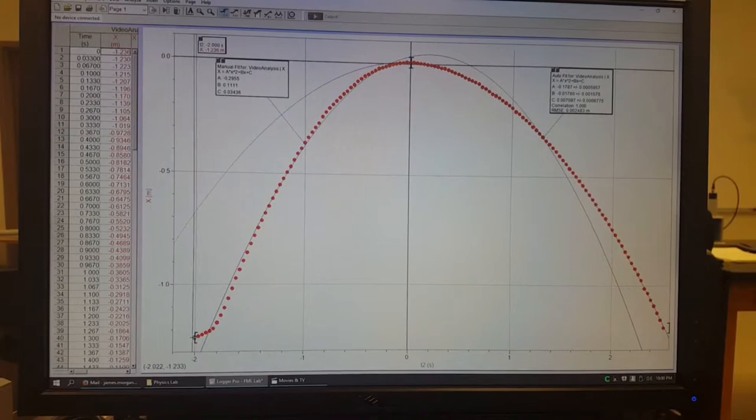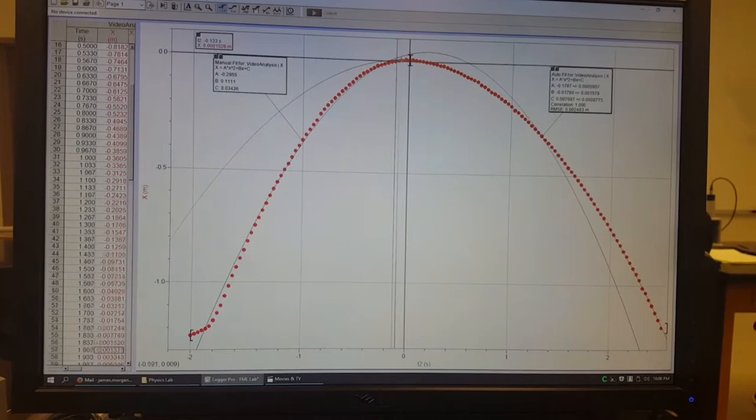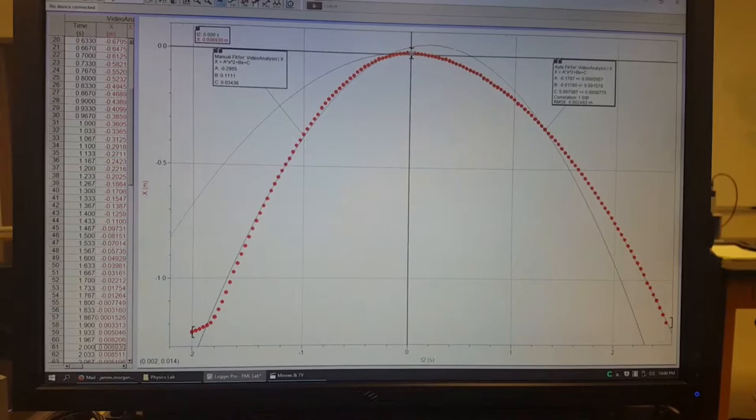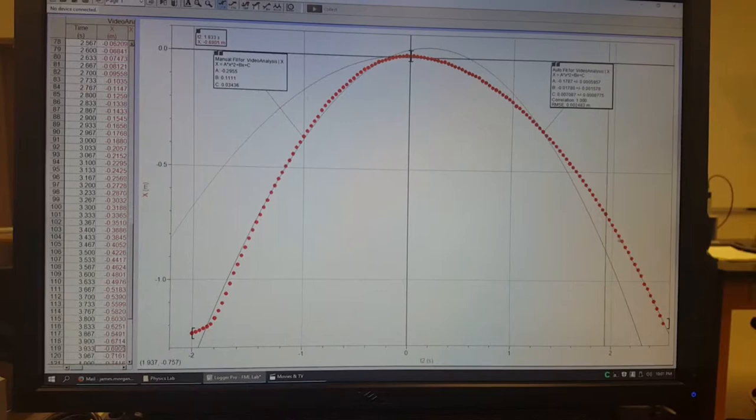Right here you can see the quadratic equation, so this is as it is going up the inclined plane. This right here is V0, the moment whenever, or not V0, but the moment that the car does not move at the very top of the inclined plane. At that point it starts moving downward with a negative acceleration right here.